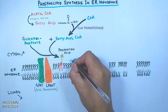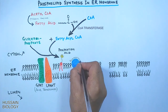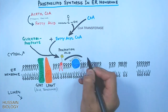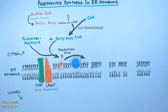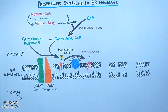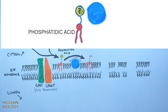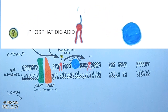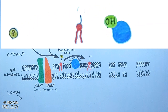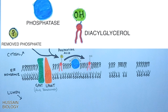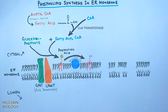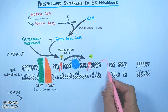In the membrane we have the phosphatase enzyme, which acts on phosphatidic acid and converts it into diacylglycerol. The phosphatase removes the phosphate from phosphatidic acid and adds a hydroxyl group to it, making diacylglycerol, and one phosphate is given off.